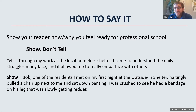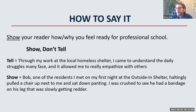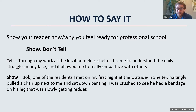In terms of how to say it, the general principle of creative writing — particularly in fiction — is show, don't tell. You want to show the admissions committee why you feel ready for professional school. An example of telling would be: 'Through my work at the local homeless shelter, I came to understand the daily struggles that many face, and it allowed me to really empathize with others.' That's telling people what you learned, but you can also show them — and this is often what makes your story unique.